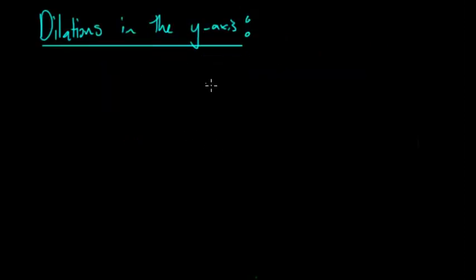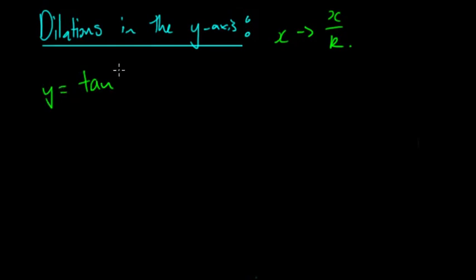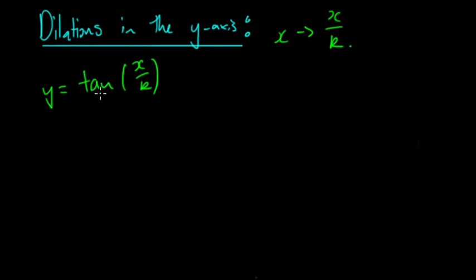Beginning with dilations in the y-axis. When we're dilating in the y-axis we replace x with x/k, so the equation becomes y = tan(x/k). This means k is inside the trigonometric function. When k was outside it changed how steep the function was, but now as it's inside the trigonometric function — just like sine and cosine — it's going to change the period and also change the asymptotes.